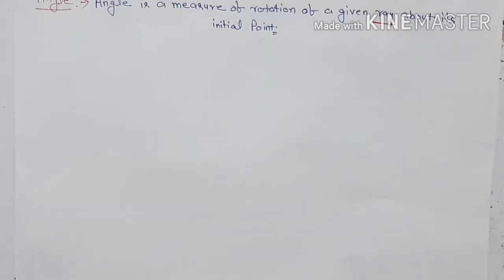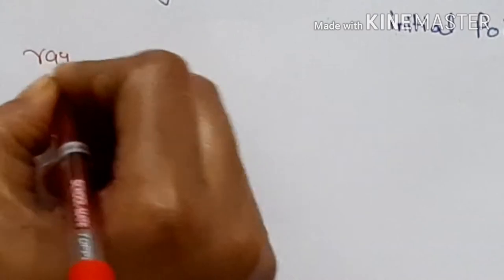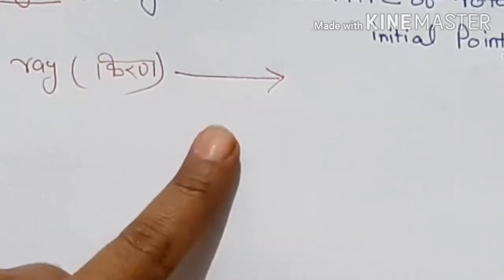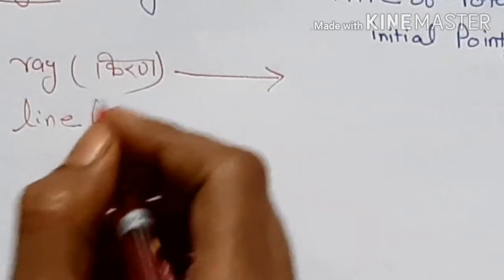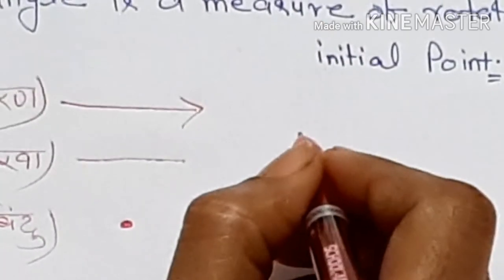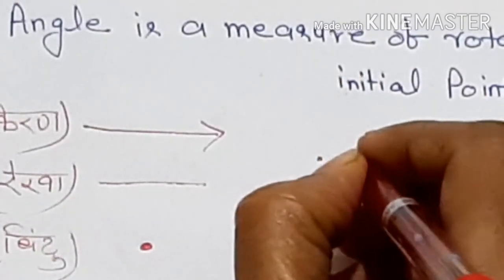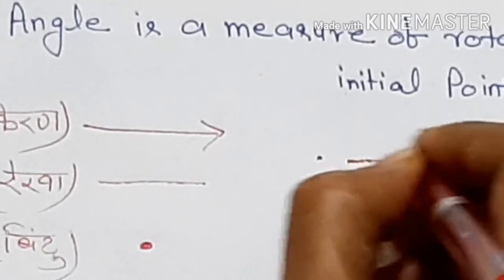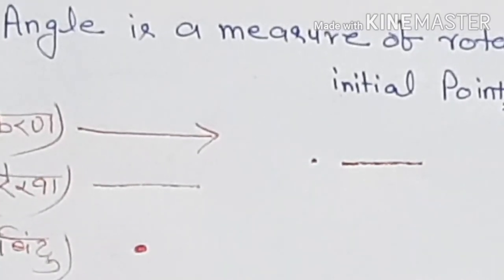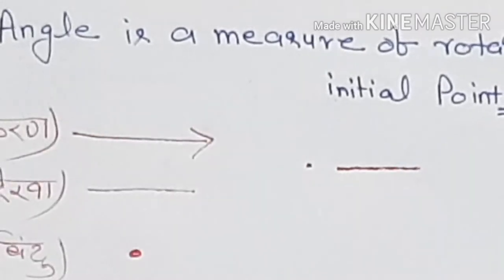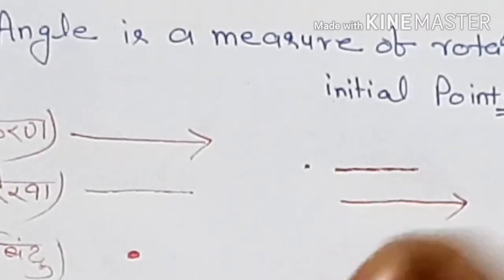Here the word 'ray' is used, so first we understand what is a ray. In Hindi, a ray is called 'kiran.' When we make a single line with a single arrow, that is a ray. A line is a combination of many points — we call it a line. If we put an arrow on a line, it becomes a ray.